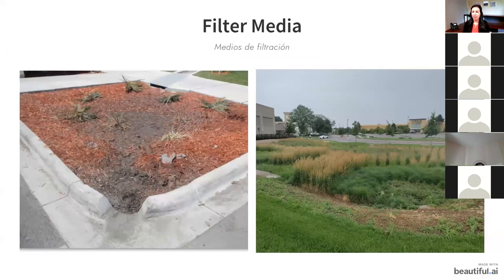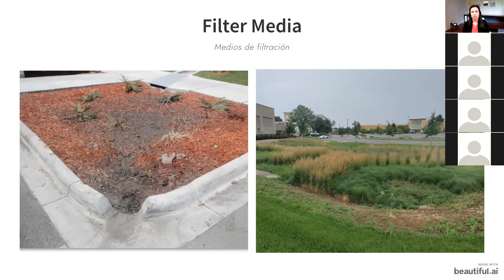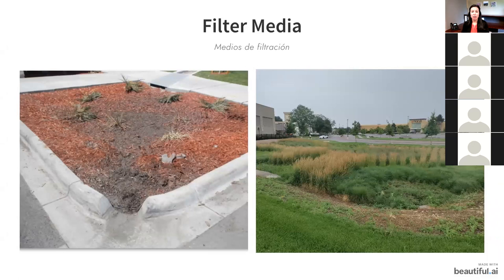Here is what filter media should and shouldn't look like. The photo on the left shows filter media clogged right in the center because it was installed at a slope — all water is concentrated in the center and plants are not receiving adequate water. Contrast that to the photo on the right with beautiful lush vegetation — when vegetation looks like that, you almost certainly have filter material that is functioning, and the deep roots are also increasing infiltration.